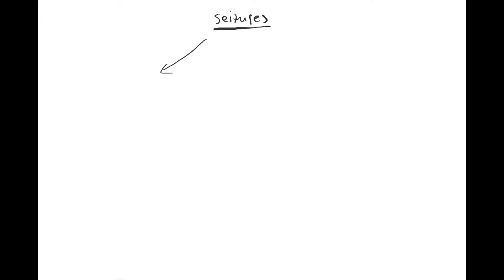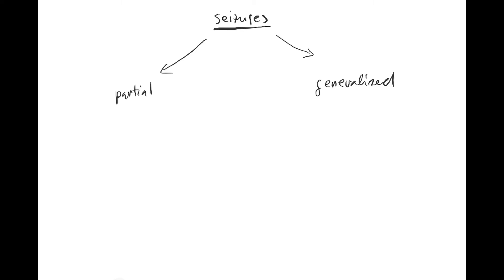There are partial seizures and there are generalized seizures. Partial means that just a part of the cortex is seizing — just a small region or bigger, but not the whole hemisphere. Generalized means both hemispheres are impacted. Within partial seizures, you divide into simple ones and complex ones.